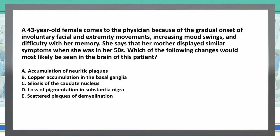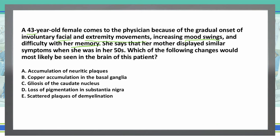Some important things to look at in this question: we have a 43-year-old female having facial and extremity movements that are involuntary, increasing mood swings, and memory issues. Her mother had the same symptoms when she was in her 50s — that's an important key factor. Between the mother's 50s and the patient's 43, we're seeing something called anticipation, where disease onset occurs earlier in successive generations. With extremity and facial movements, mood swings, memory issues, and anticipation, we're dealing with Huntington's disease.